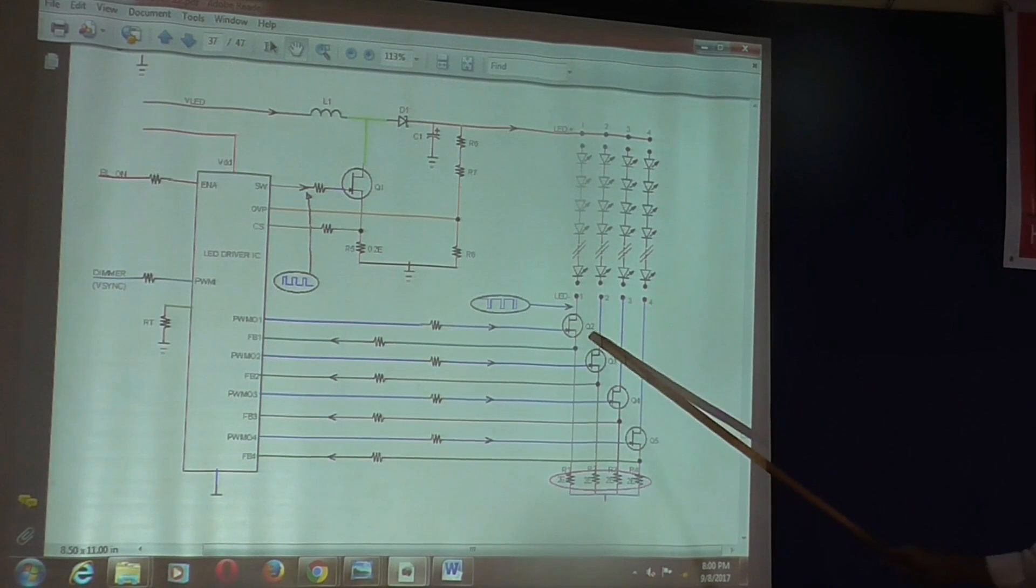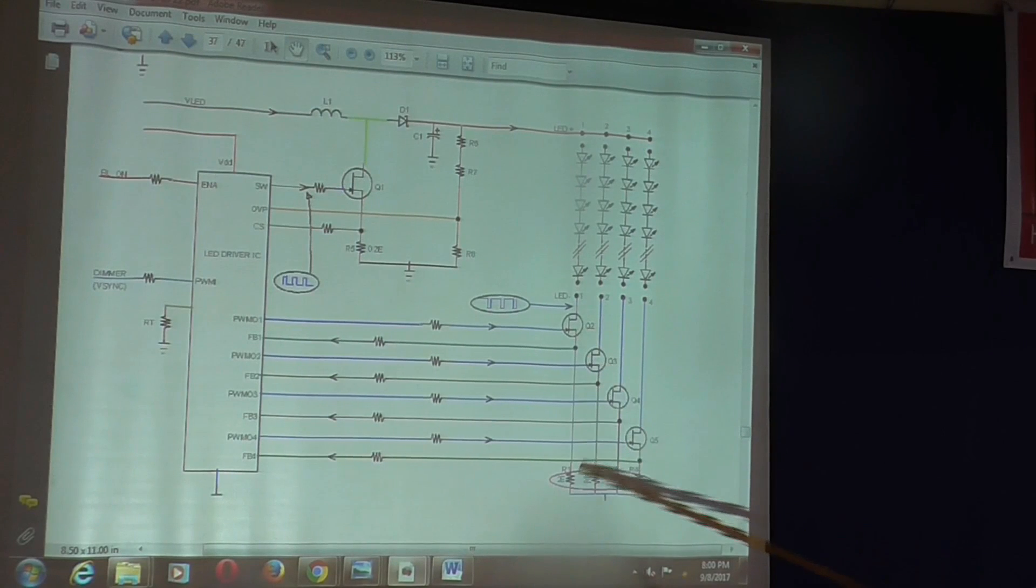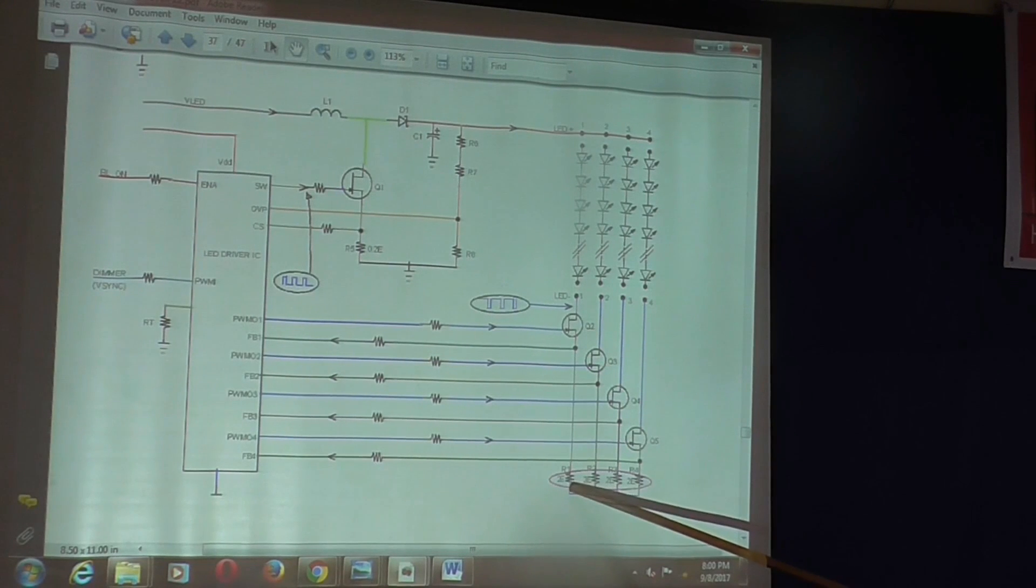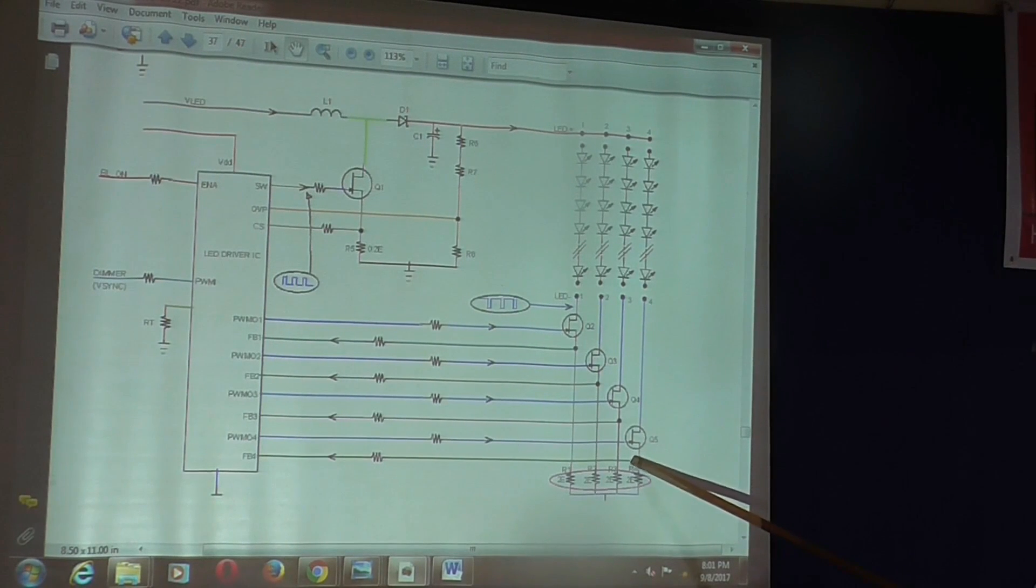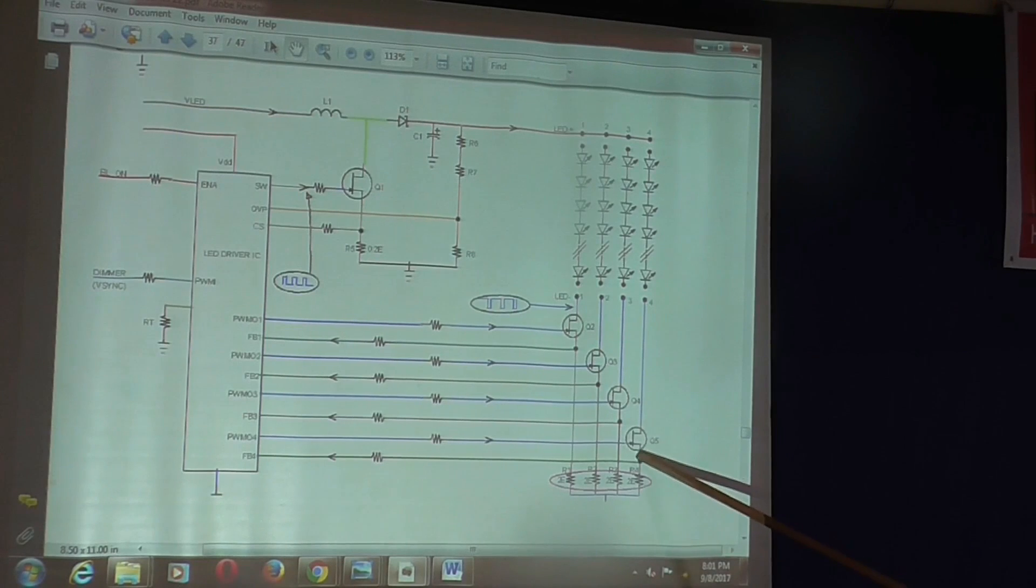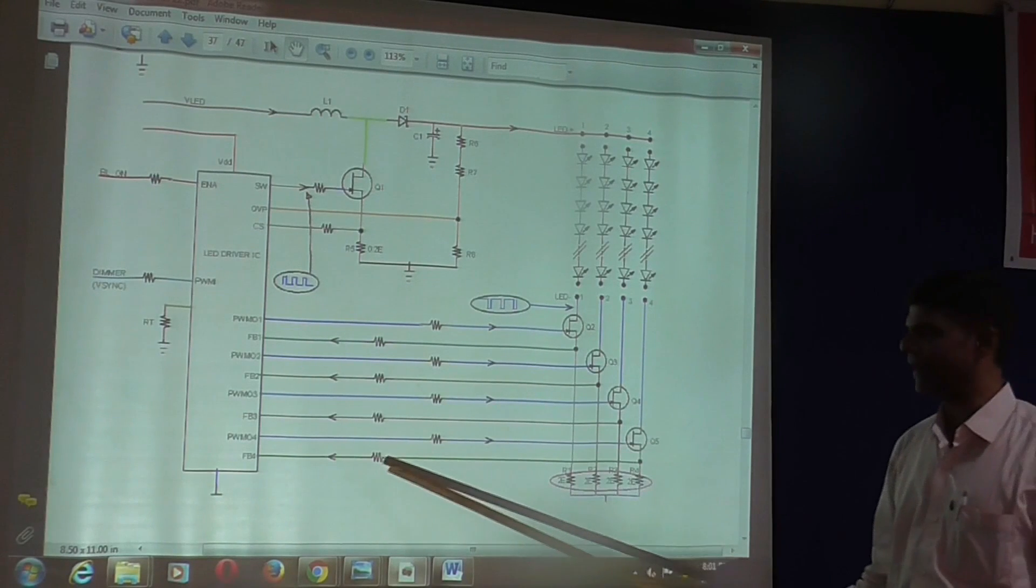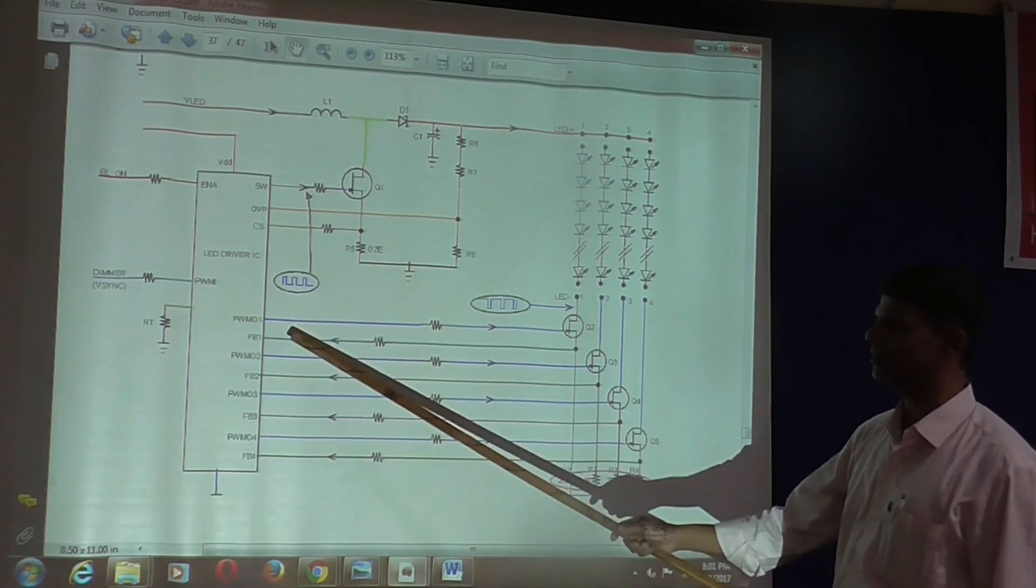At the source end, equal value of resistance is used—here 2 ohms for each of the sources. From the source terminal of each FET transistor, a feedback is given to respective pins of the IC.